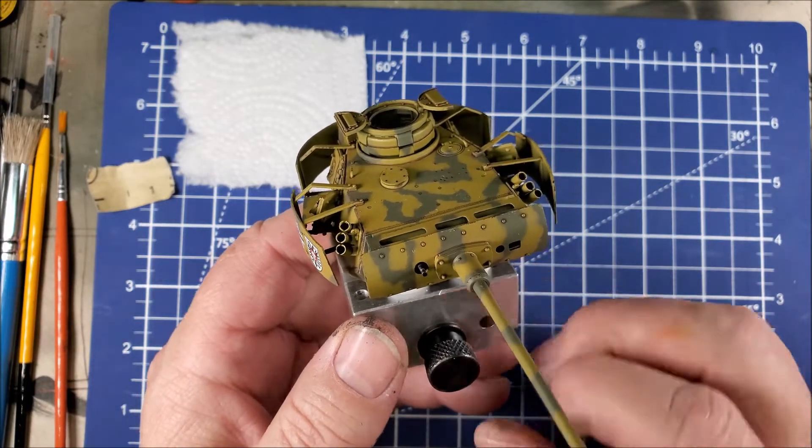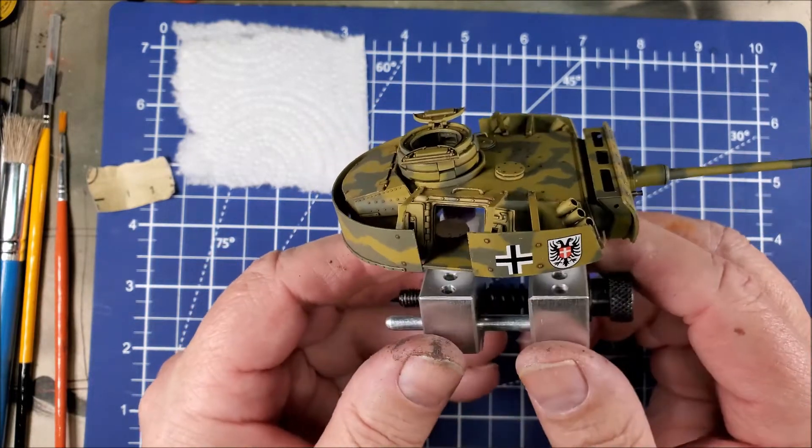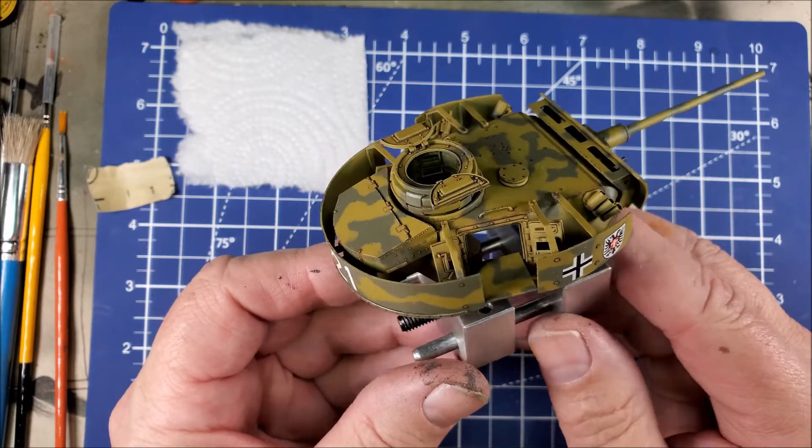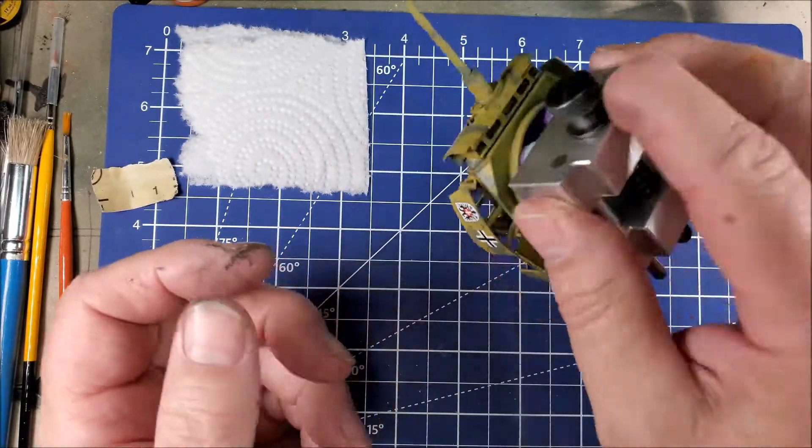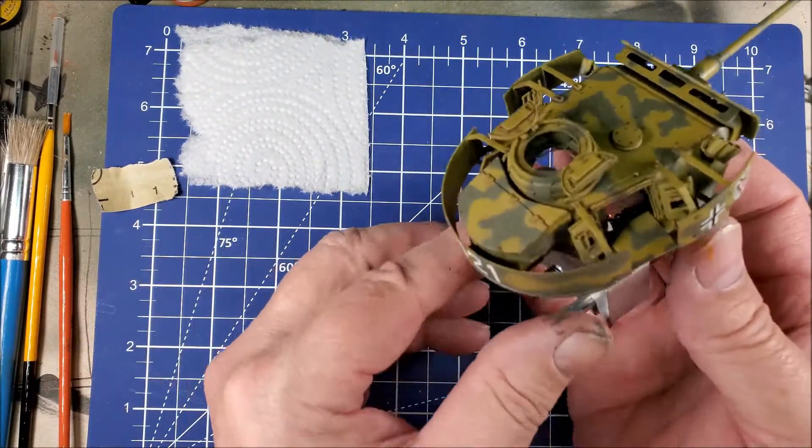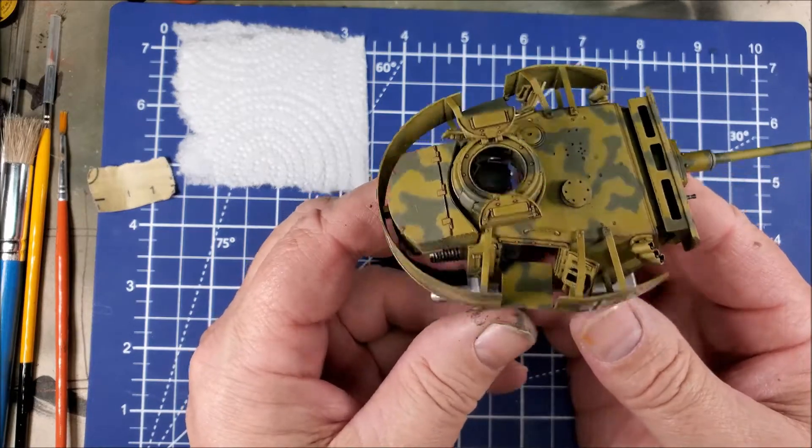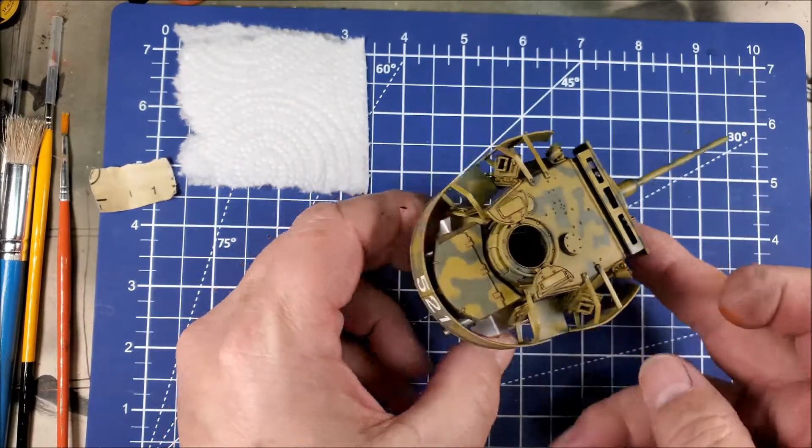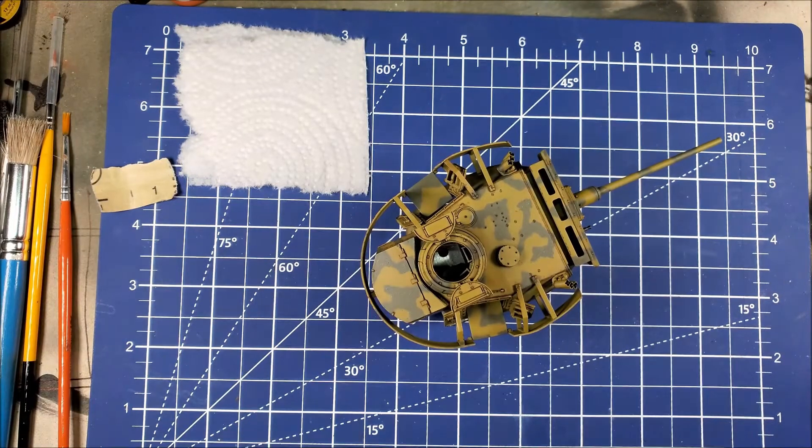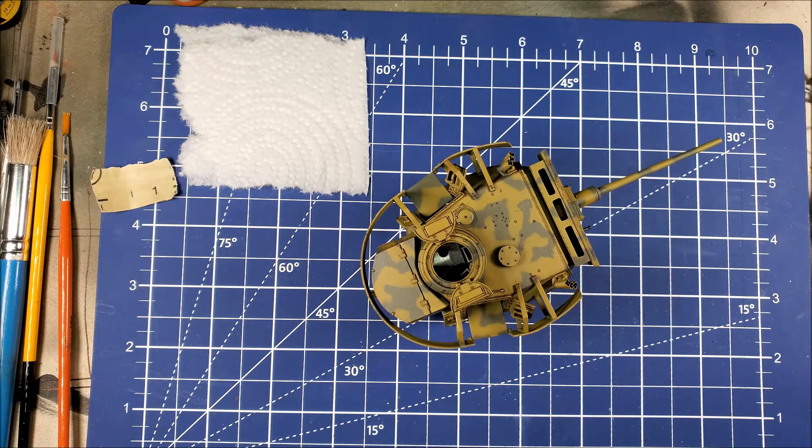And now with the abrasive sandpaper strips on the posts, it really grips the turret well—not to worry about it popping off. So anyway, I wanted to share that tool with you and maybe that's something you would find useful in your toolbox.